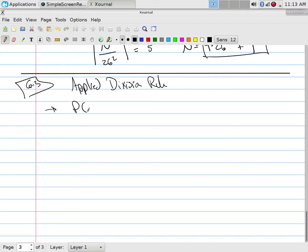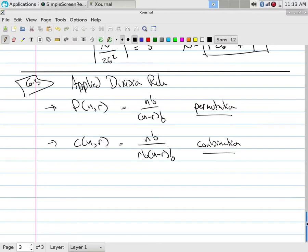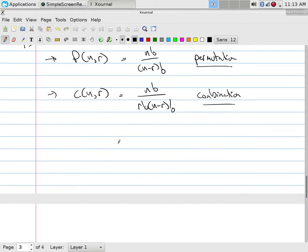Now 6.3 is just simply the applied division rule and it becomes P(n,r) which is equal to n factorial over n minus r factorial and C(n,r) which is equal to n factorial over r factorial n minus r factorial. This is called the permutation function and this is called the combination function. But permutations and combinations are just simply the division rule. That's all they are.